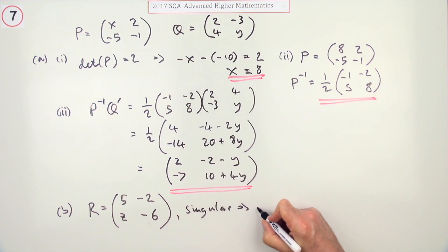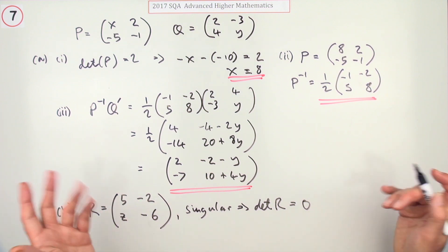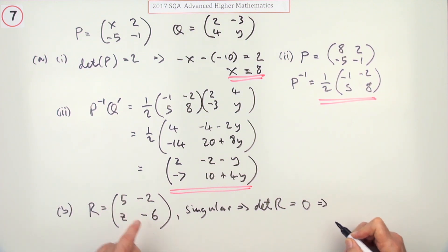Find the value of the letter inside the determinant. The determinant is the product of the main diagonal, which is -30, minus the product of the other diagonal, which is -2z. That should equal zero. So 2z equals 30, therefore z equals 15.